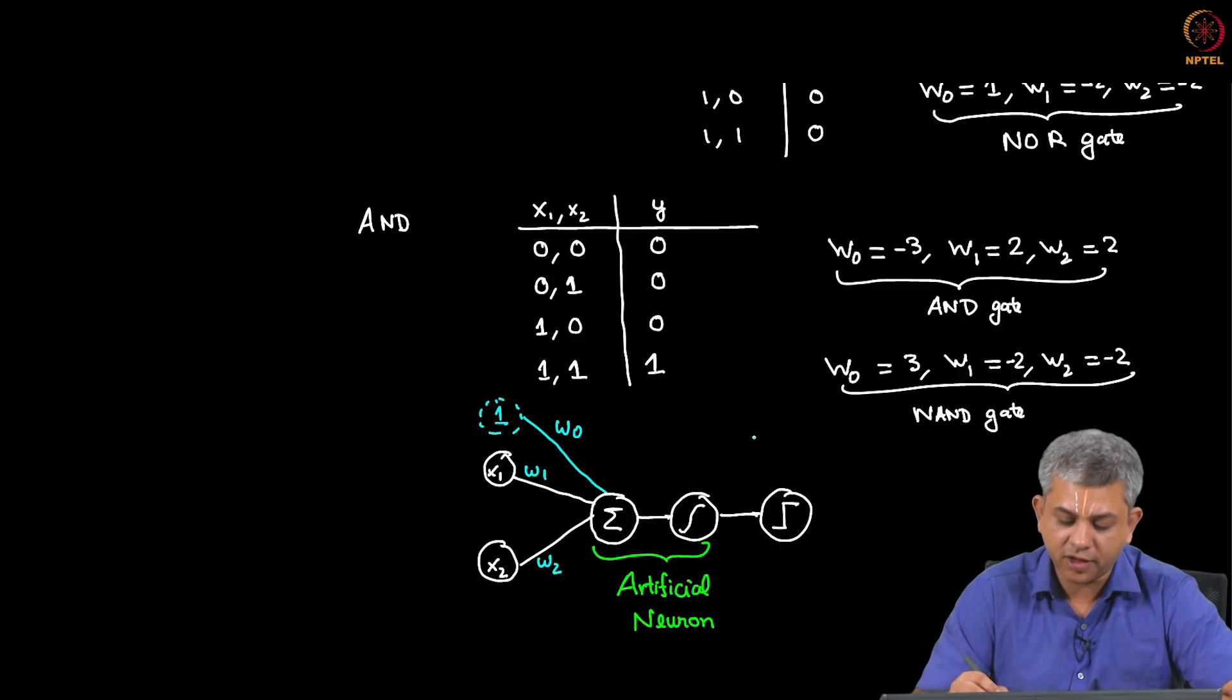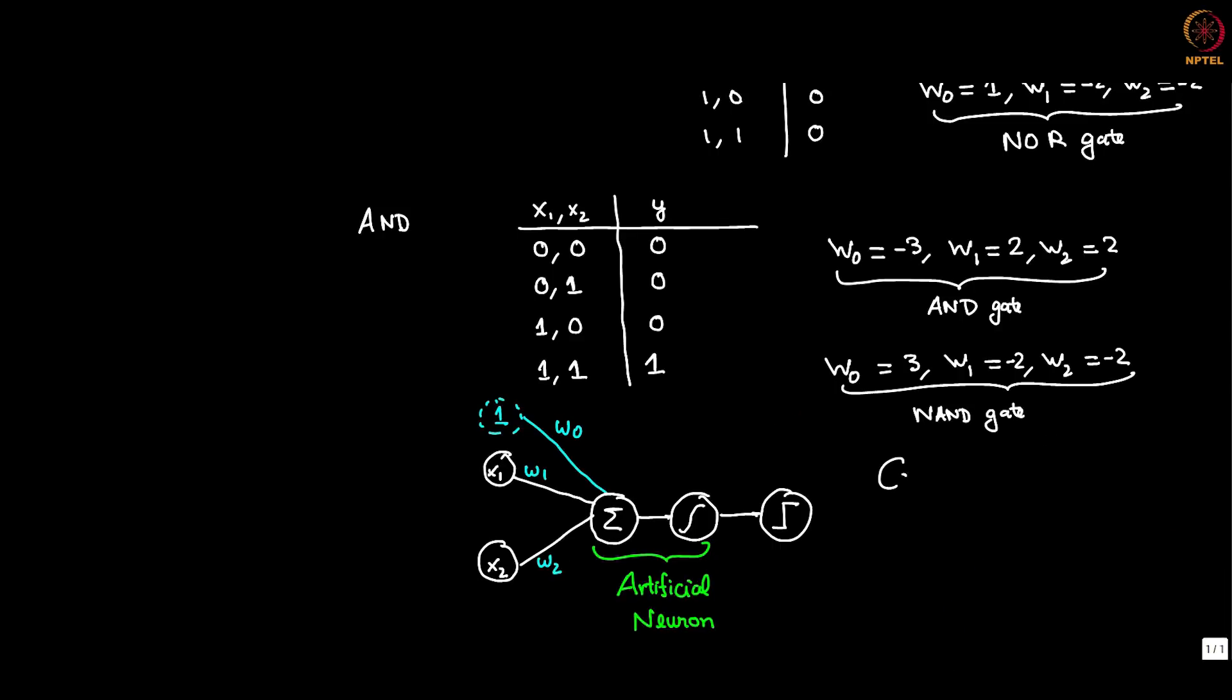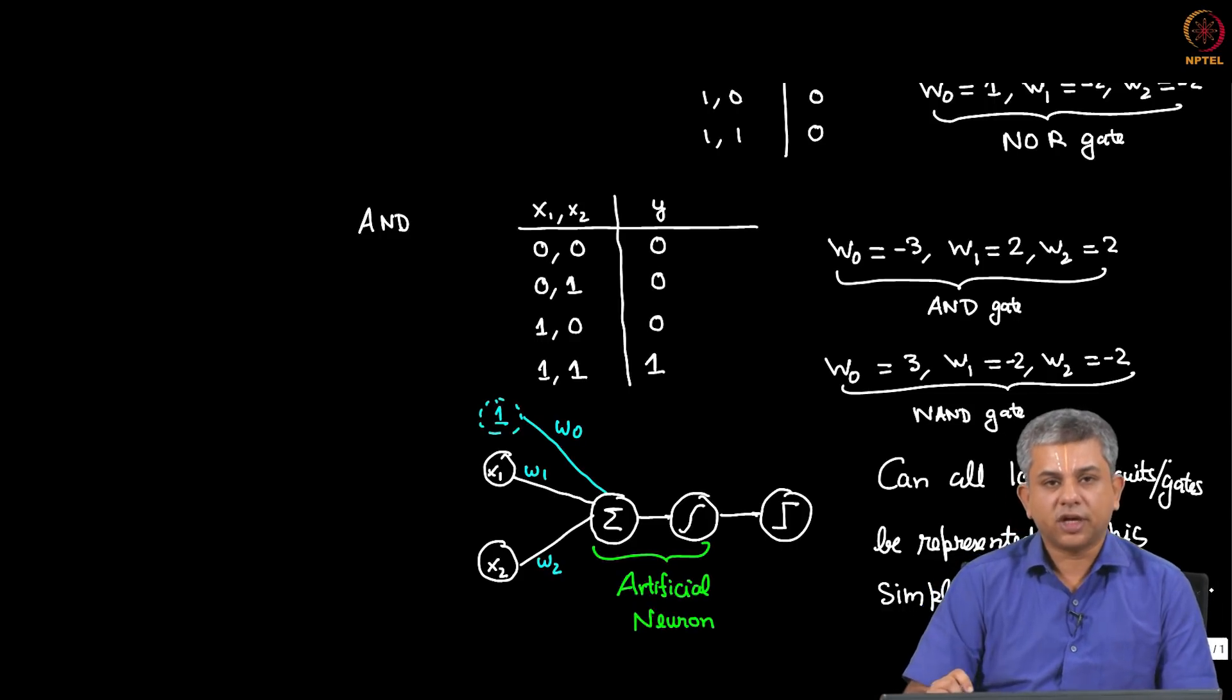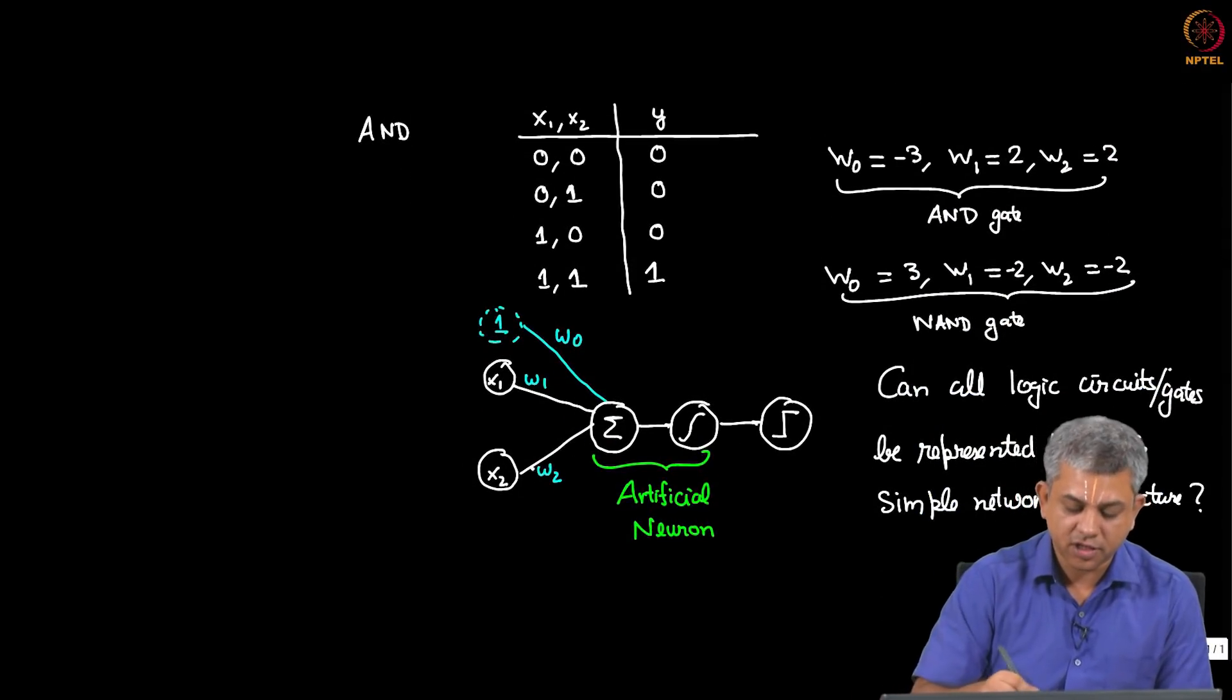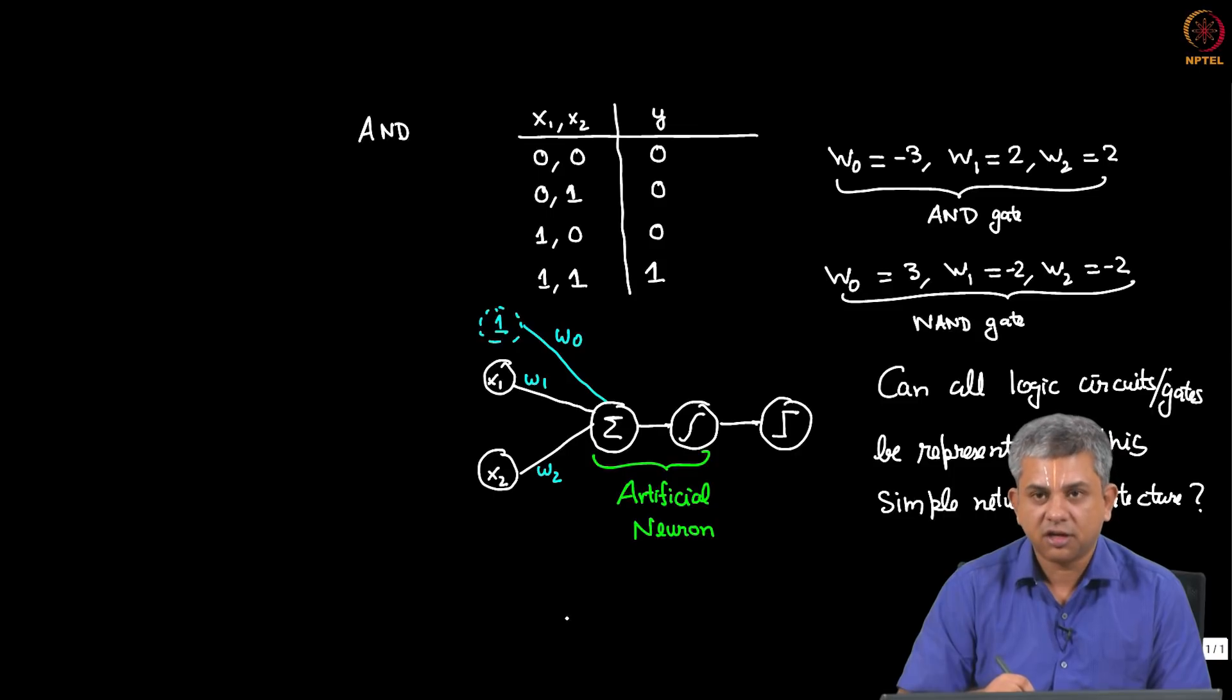So the question I will stop this video with is: can all logic gates, or in fact can all logic circuits, be represented by this simple network? We will see in the next video that this is not possible, and since it is not possible, that is what leads us to extra layers within this neural network when we have to consider things like XOR gate.